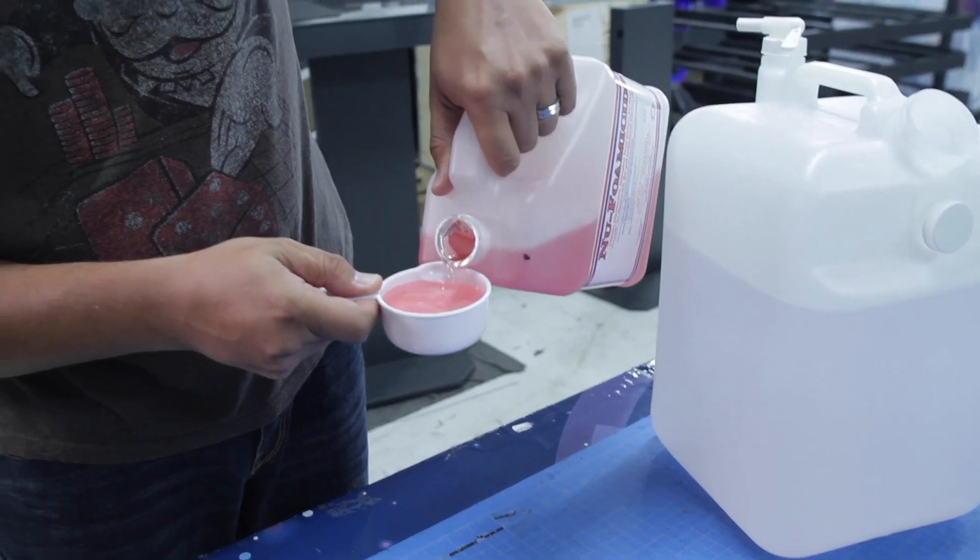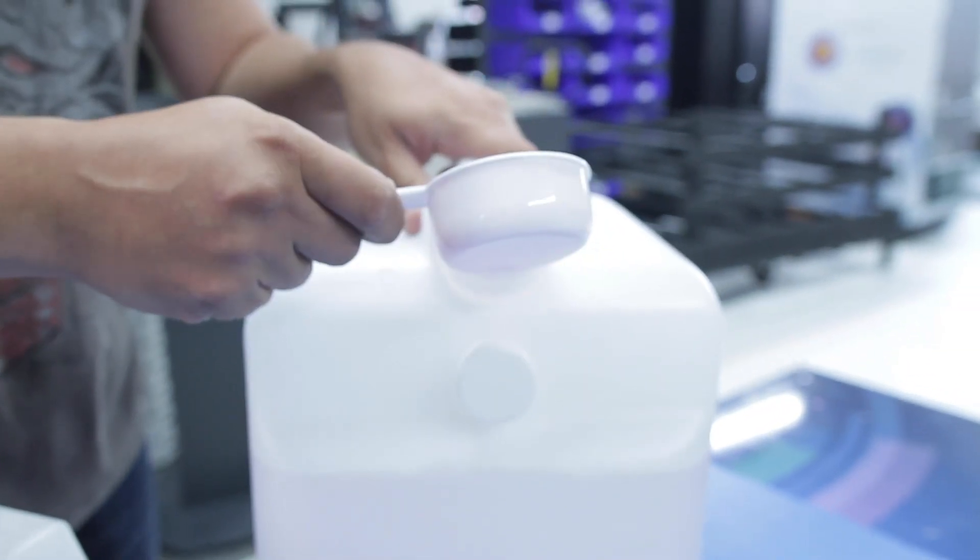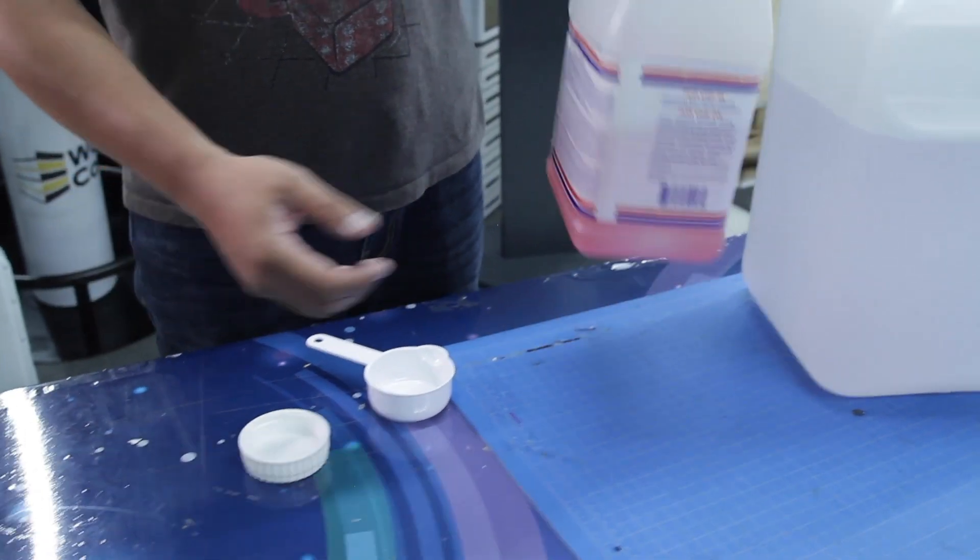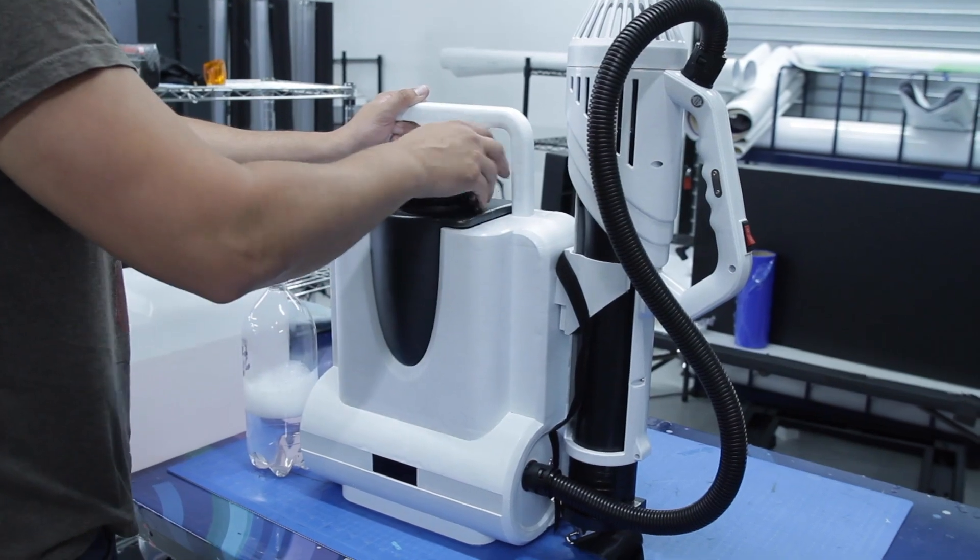For the Luxe recommended solution, simply add eight ounces of Fomicide agent to every one gallon of water to create the right cleaning solution balance. For different solution providers, follow the mixing instructions they provide. Once your solution is mixed, you're ready to disinfect.